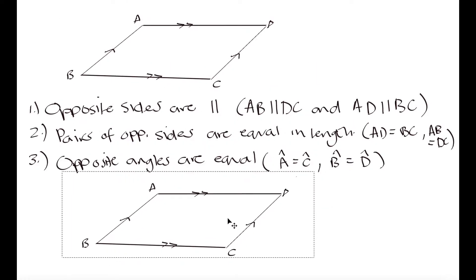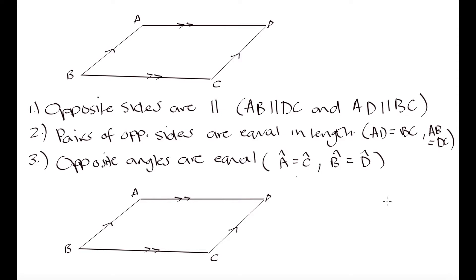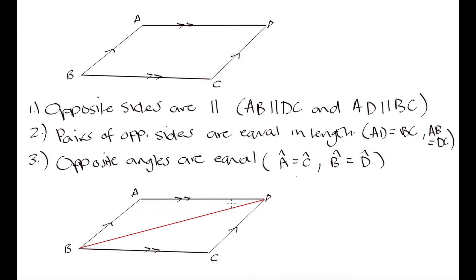If we take our parallelogram and join two opposite vertices by a diagonal, we create two triangles. We have a triangle made up of sides B, A, D and another made up of sides B, C, D. What we have also done is created a transversal cutting through parallel lines. When a transversal cuts through parallel lines, we can extract information about the angles — many of which will have equal values.